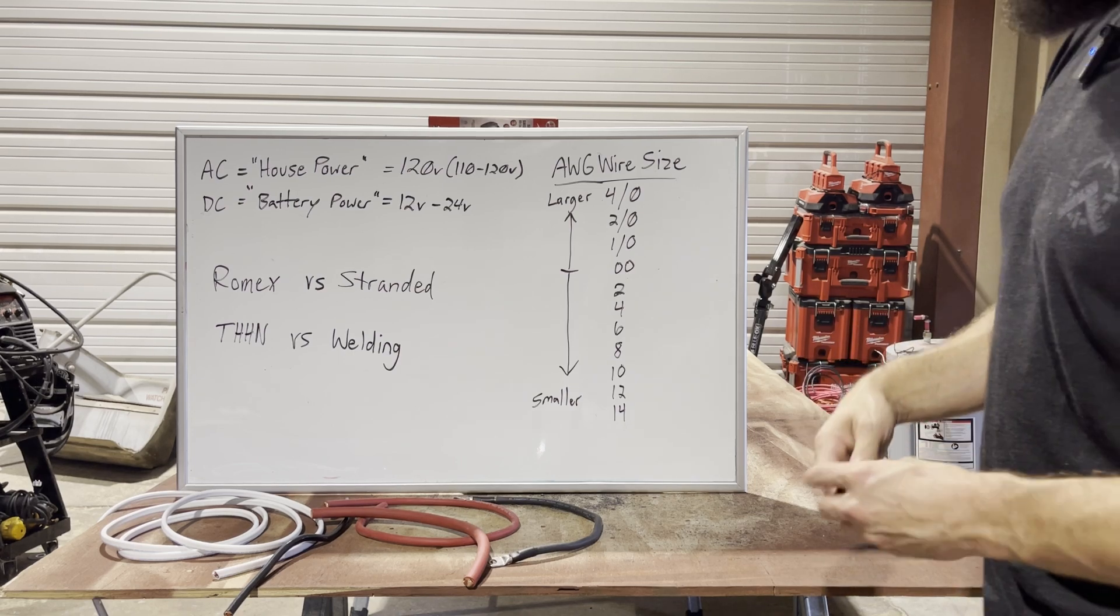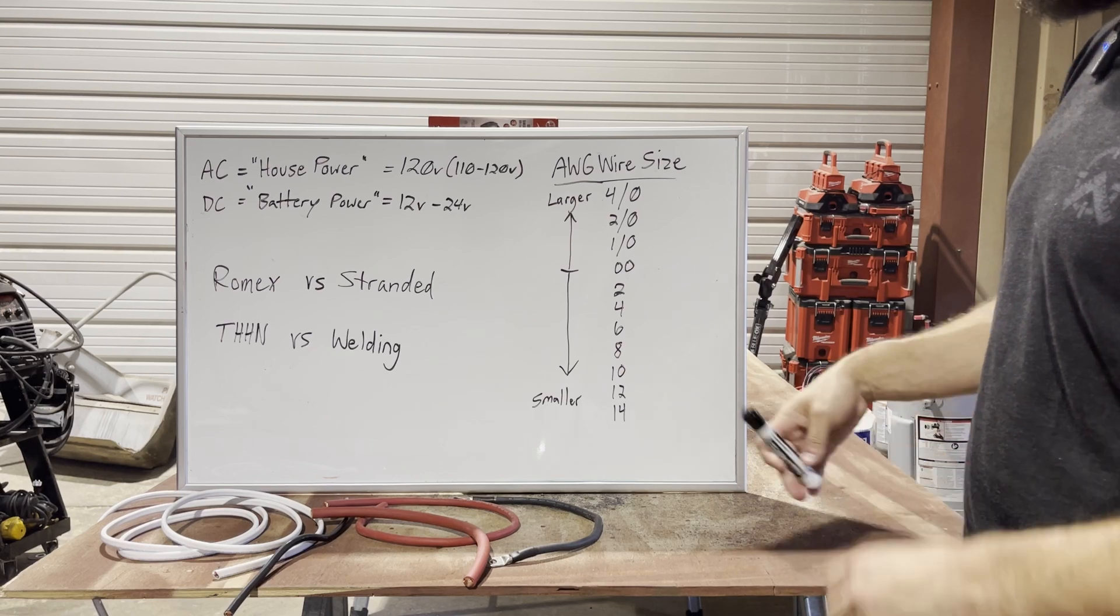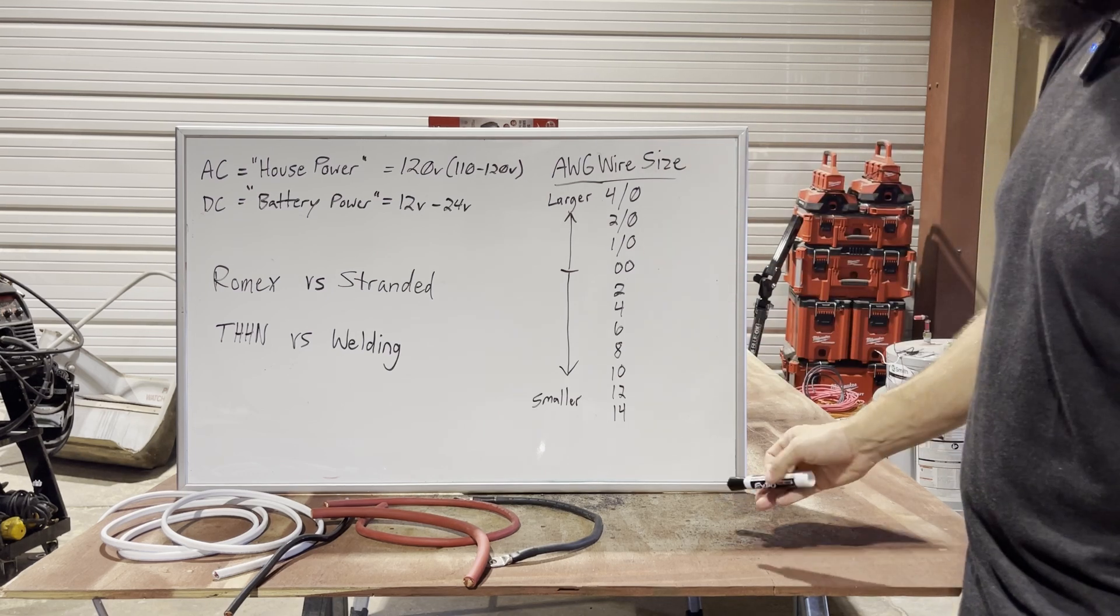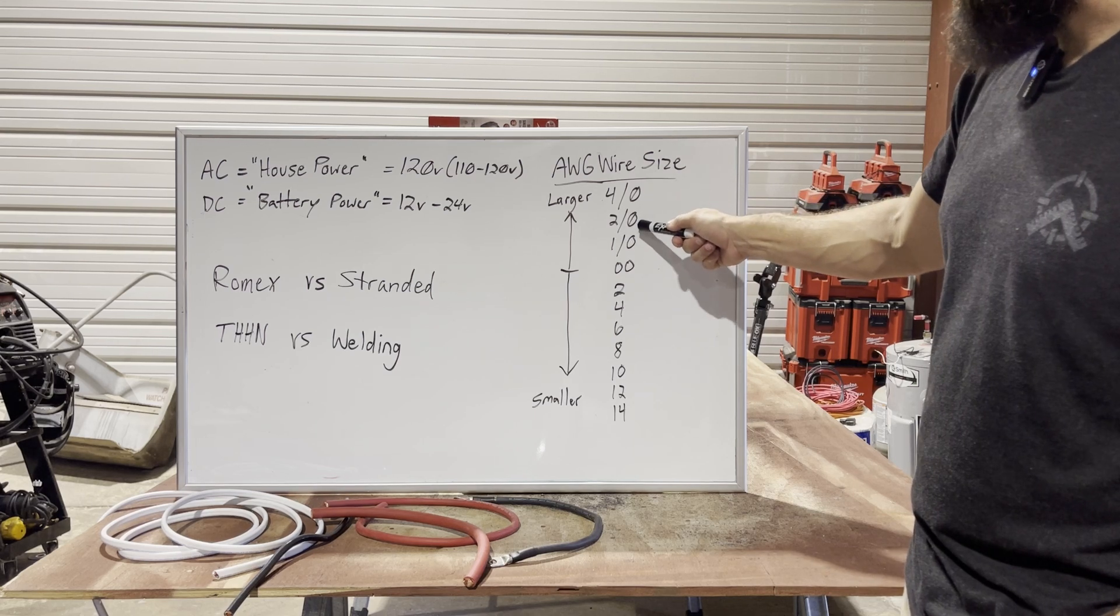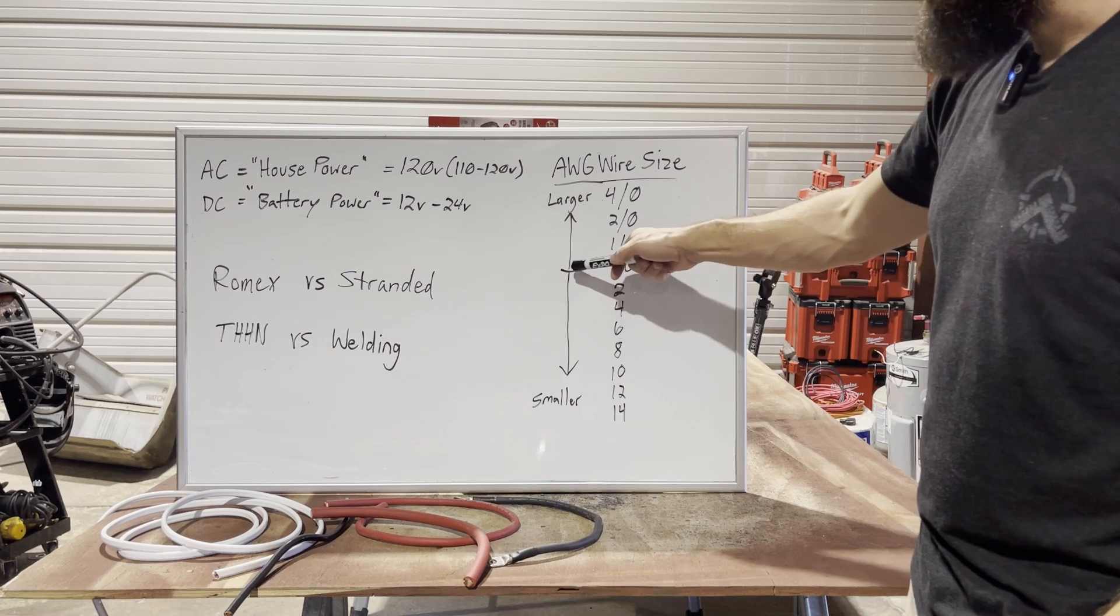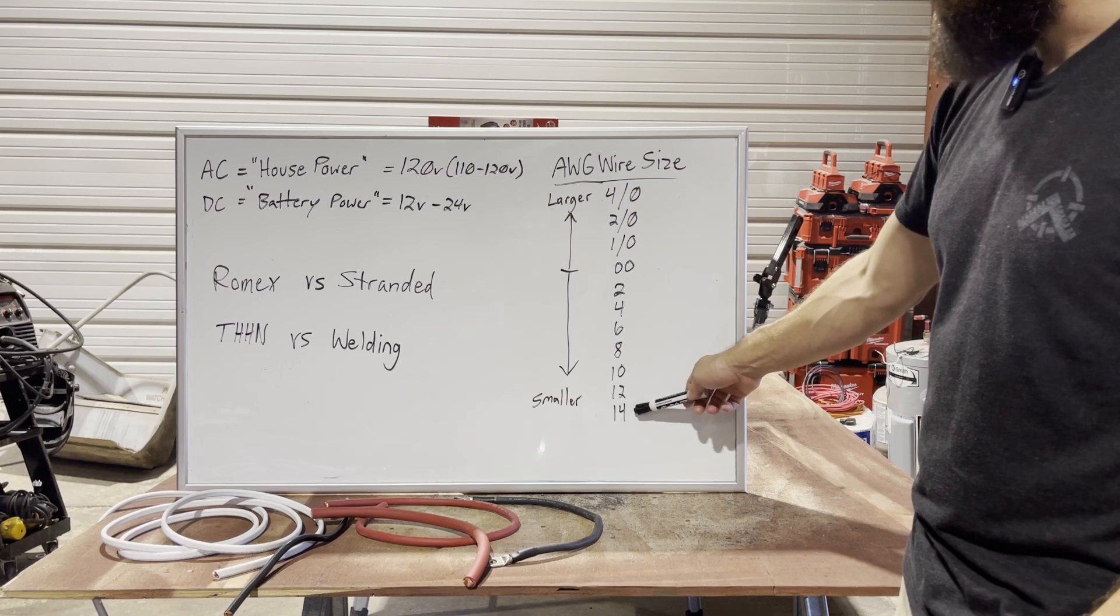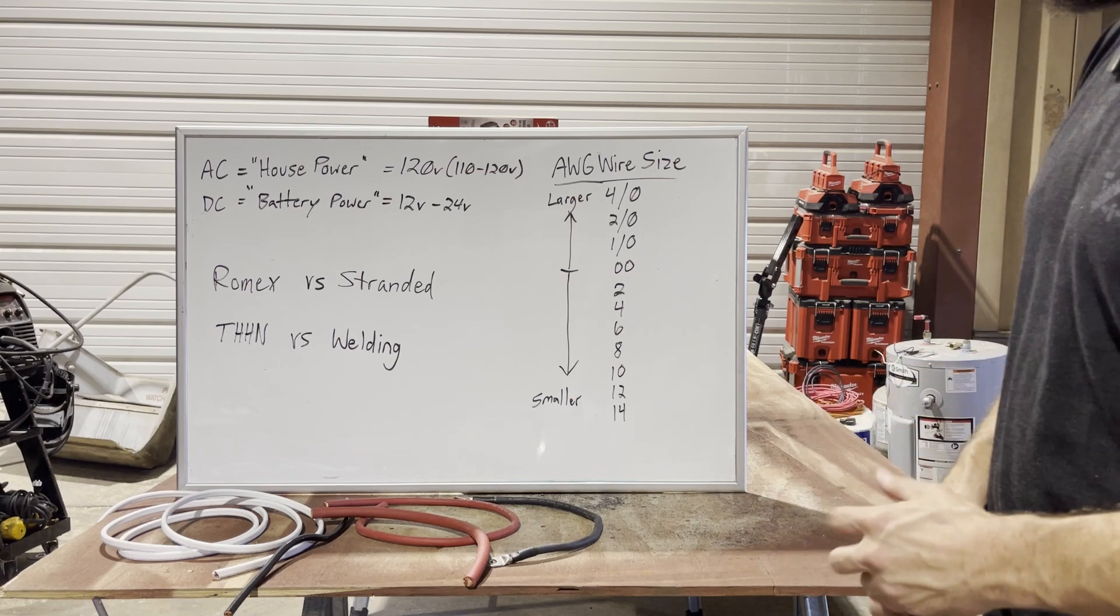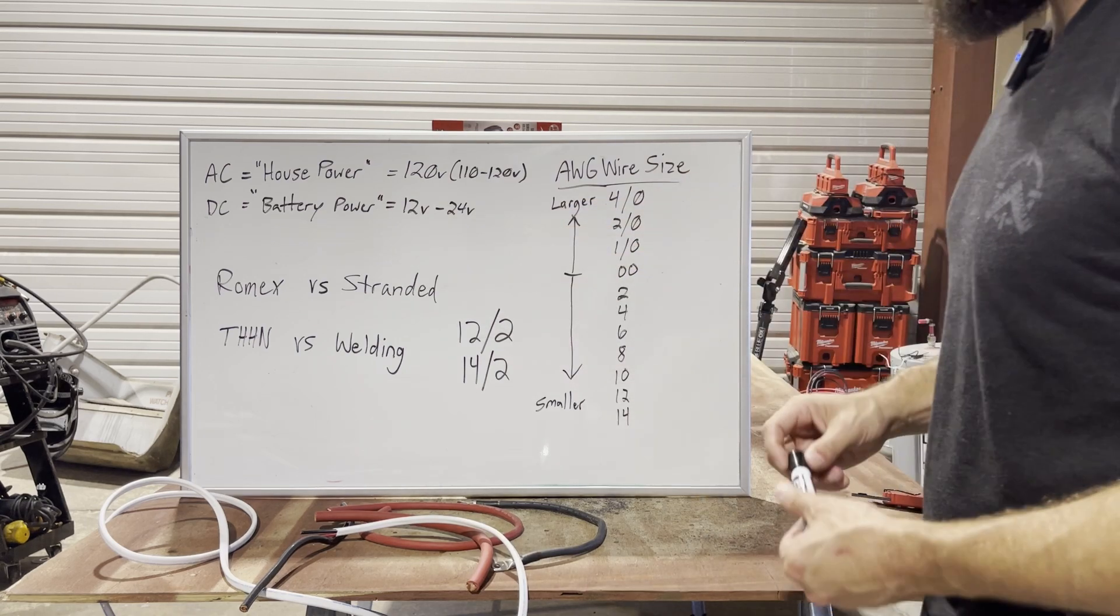Now the next basic is going to be wire size. AWG is the standard American wire gauge. It's a confusing system that goes 4/0, which is pronounced 4 ought. That's the largest. Then next one down, 2 ought, 1 ought, 0 ought. That's kind of your middle line. At this point, the numbers start going the opposite direction from larger to smaller. So 14 is about the smallest I use in a bus. This wire size guide is consistent and works with both AC and DC.